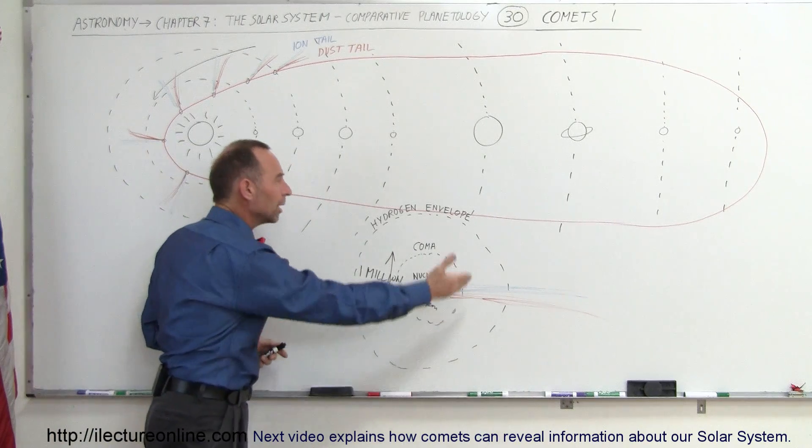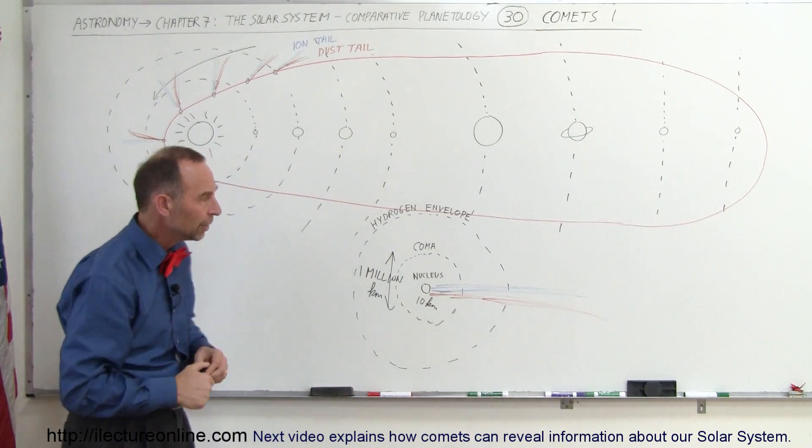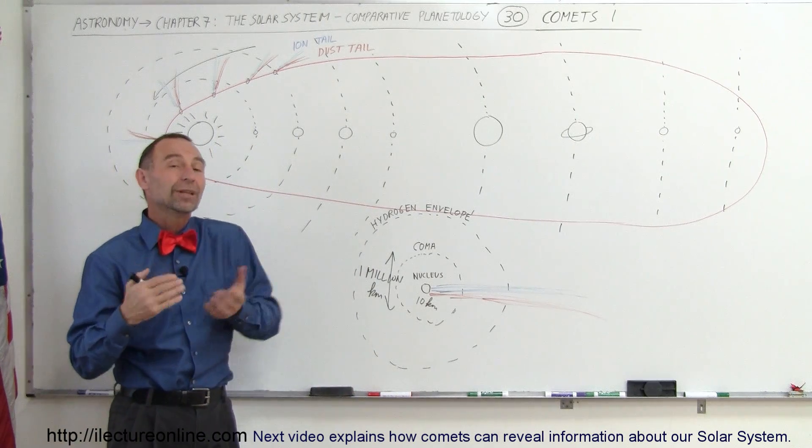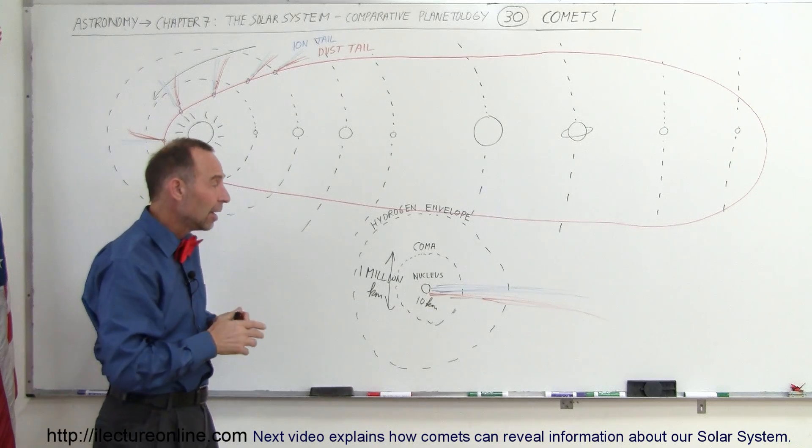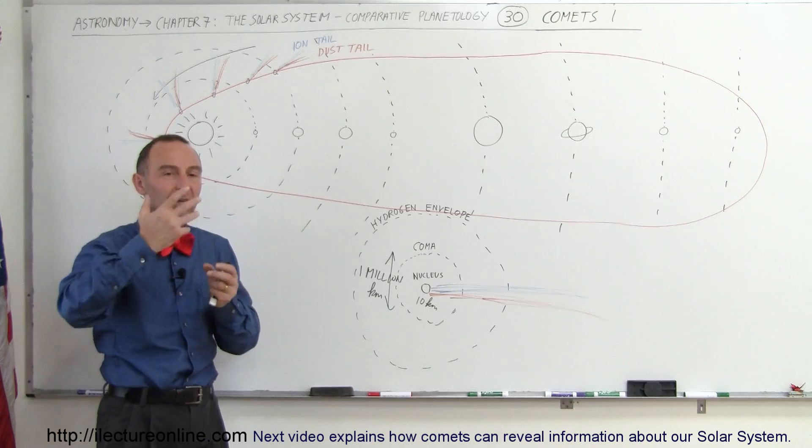Around the coma, there's even a larger envelope around the comet. That's called the hydrogen envelope, but that's typically not visible to the naked eye, but in the ultraviolet radiation, because of the ionization of the electrons,